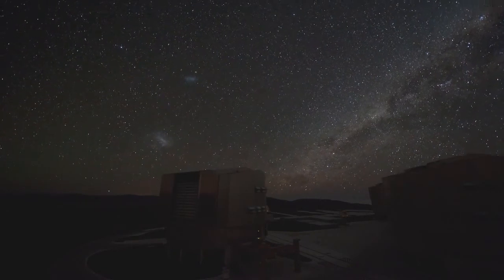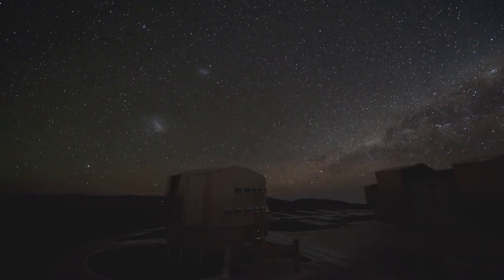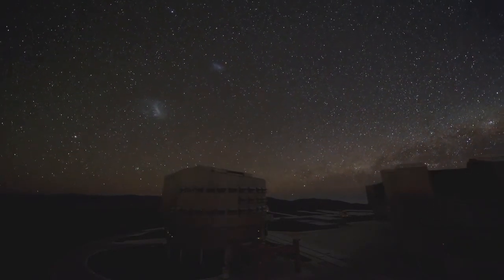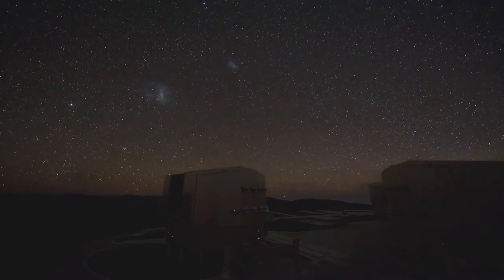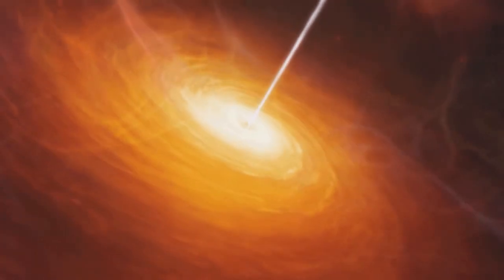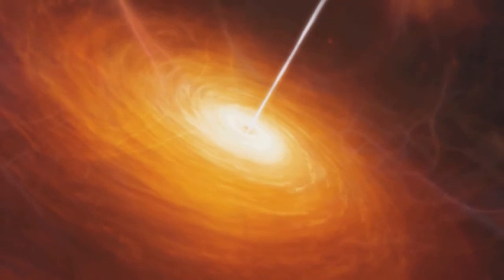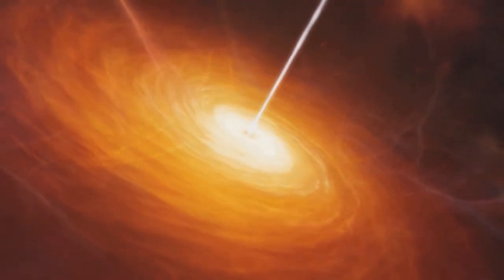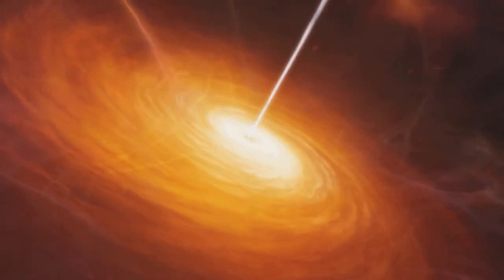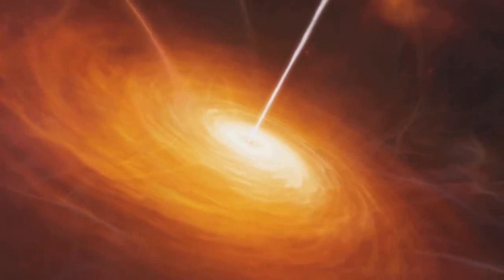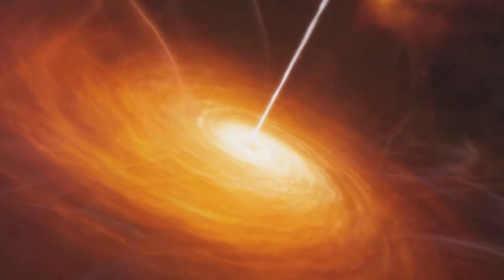Despite the vast distance, the quasar's extreme brightness made it possible to identify other characteristics using the same two telescopes. It was determined that the black hole powering the quasar has a mass of about 2 billion times that of our own Sun. This is an extraordinary mass for an object so early in the Universe.